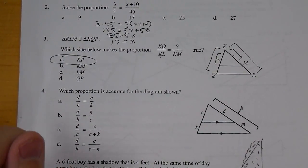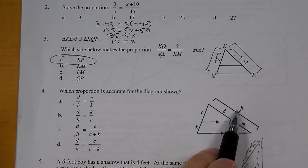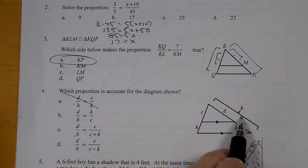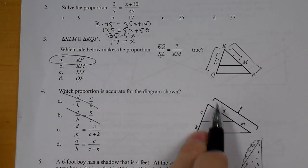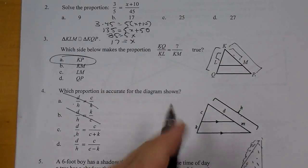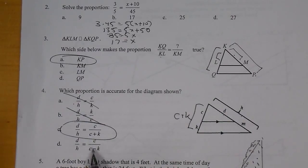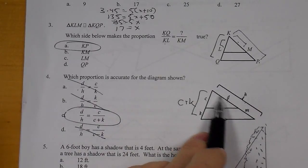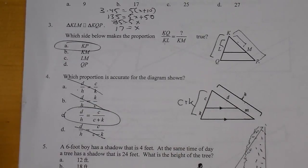For number 4, which proportion is accurate for the diagram shown? dh over ck. dh is the top piece over the whole thing. ck is top over bottom, so that one is out. dh is top over whole thing, and then that would be kc is bottom over top. That's out. dh is top over whole thing. c over c plus k is top over whole thing, because that is c plus k here. So that one looks like it works. This last one is the same idea, but subtraction, so that one is out. So c is our best answer, because it is the top piece of this line over the whole side equals the top piece, c, over the whole side, c plus k.